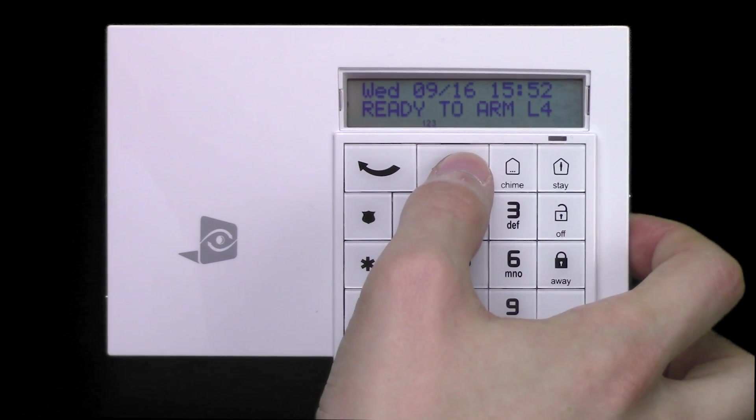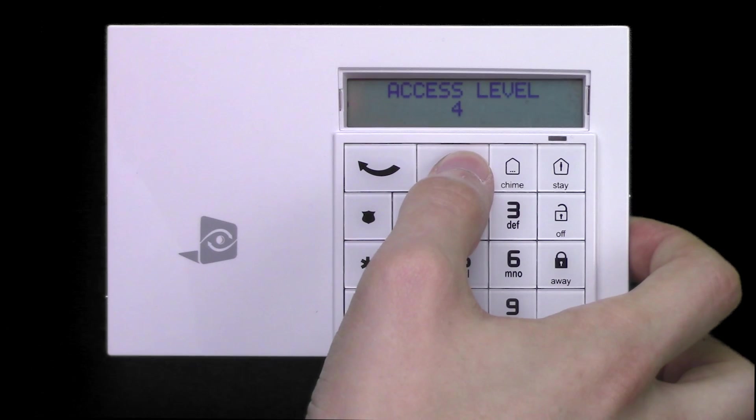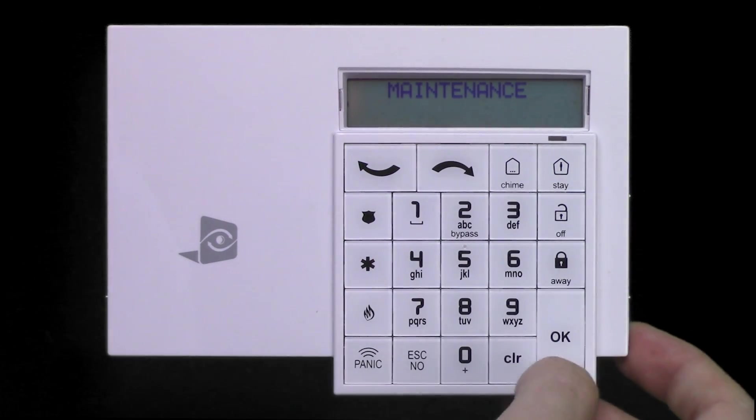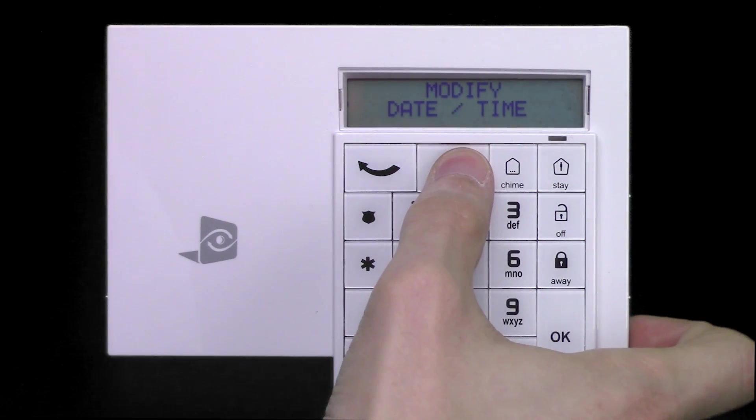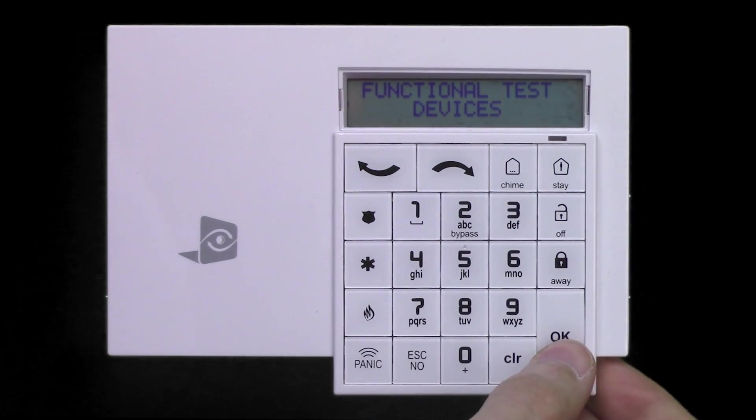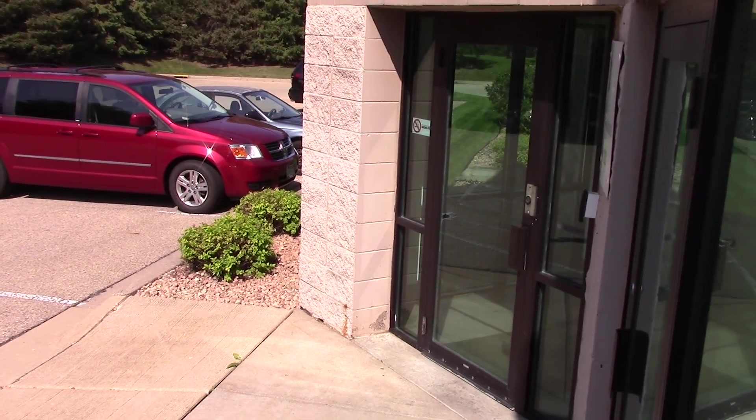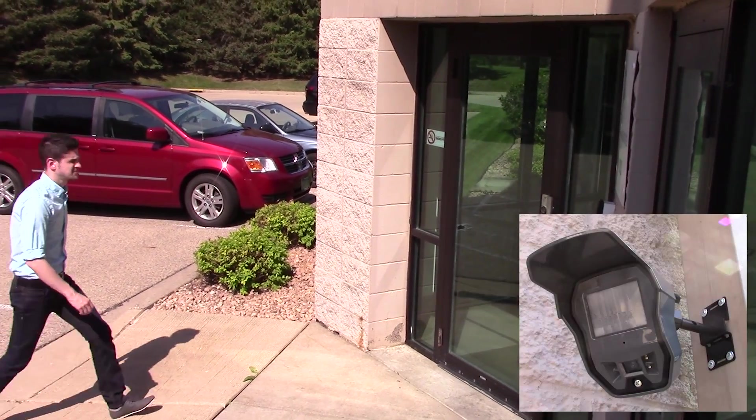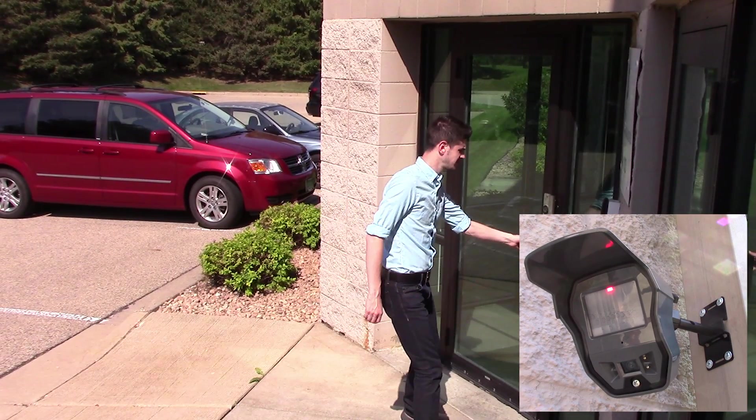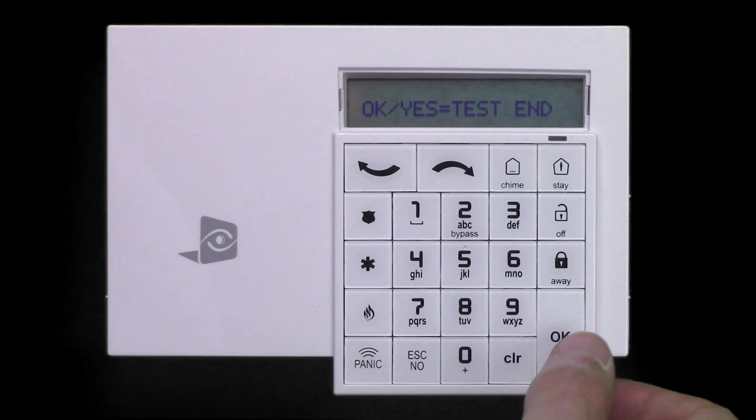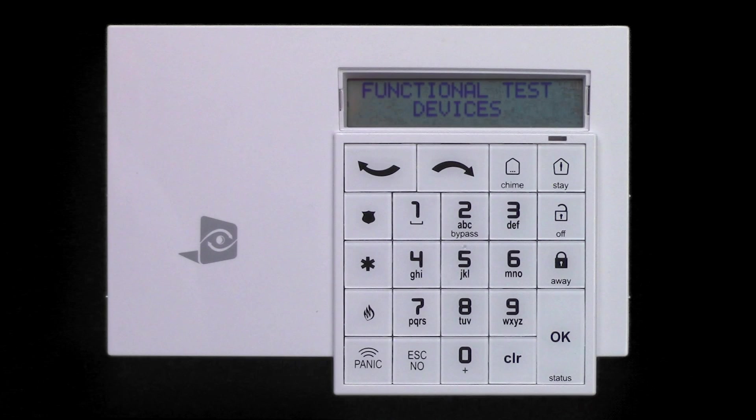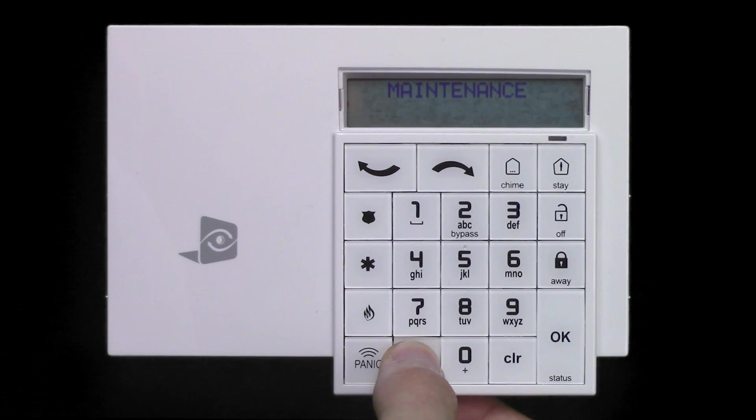At the keypad, navigate to the maintenance menu, then to functional test devices. Walk in front of the Motion Viewer and verify that the red LED behind the Fresnel lens illuminates where detection is needed and doesn't illuminate in areas where detection is unwanted. Press OK to end the test. Press and hold the ESC no key to return to the main menu.